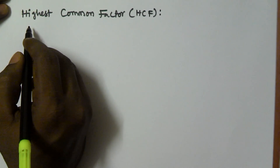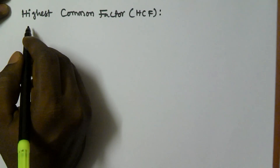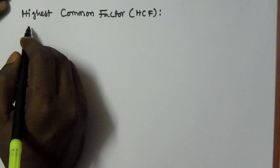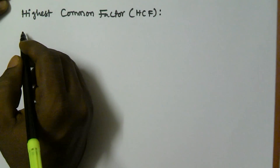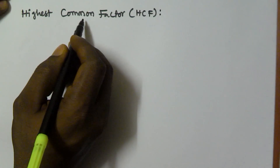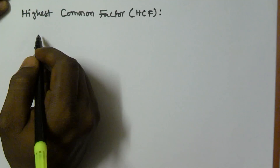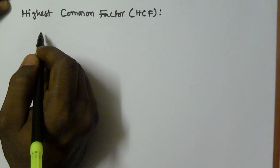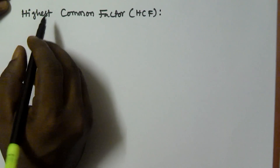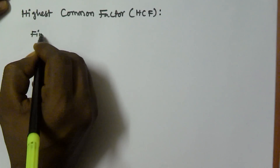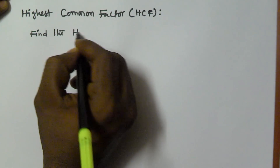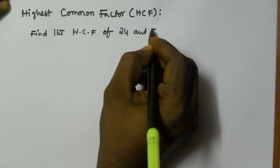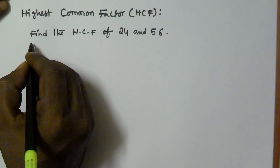Hello friends, in this video I am going to explain what is HCF and how to find the HCF of given numbers. HCF stands for highest common factor. The highest common factor of two or more numbers is the greatest number which divides each of them exactly. For example, find the HCF of 24 and 56.